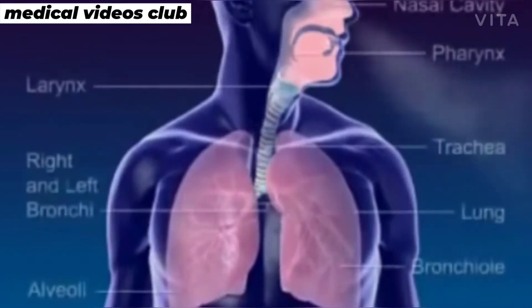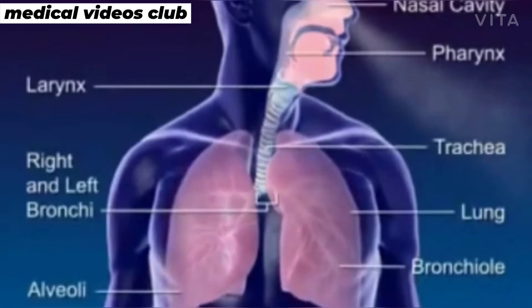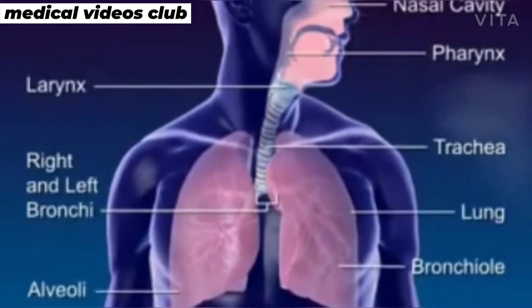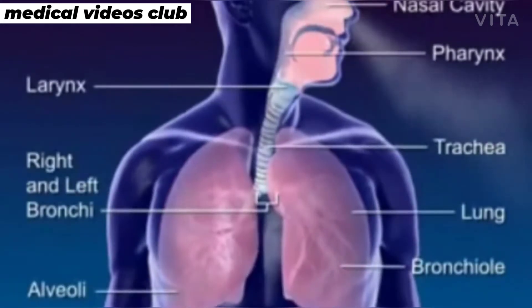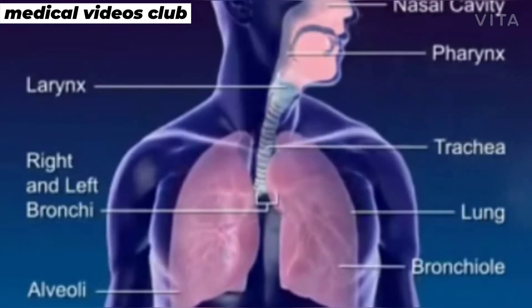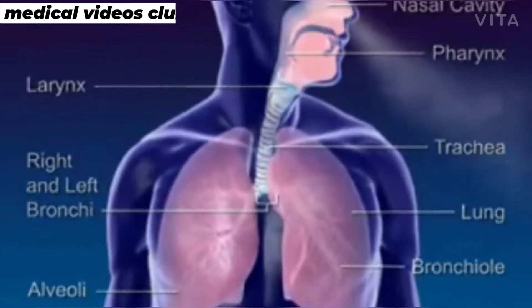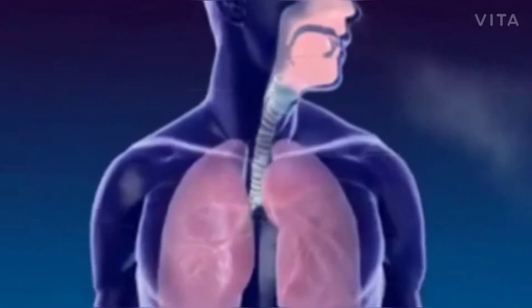The respiratory system moves air through the nose, pharynx, larynx, trachea, and bronchus to the alveoli, where the gas exchange between oxygen and carbon dioxide occurs.